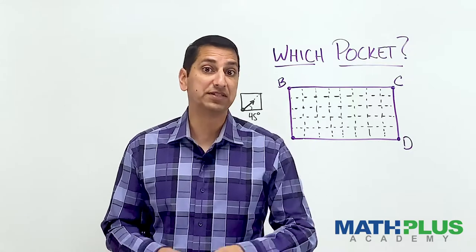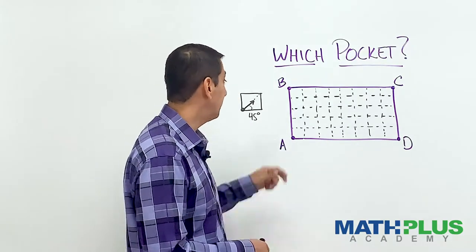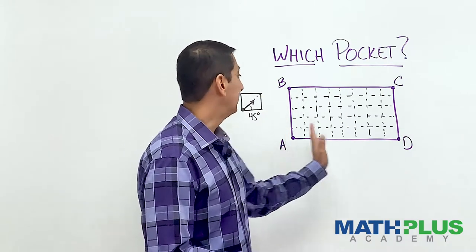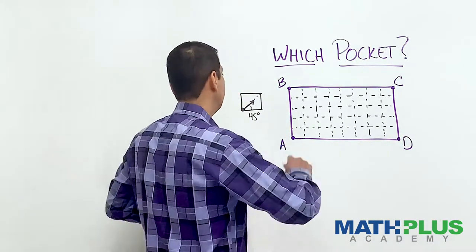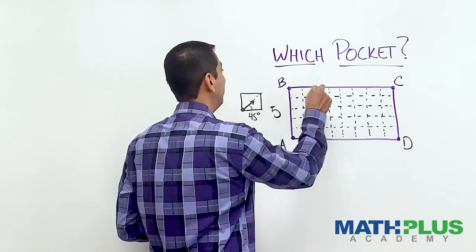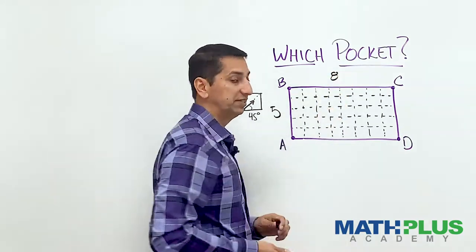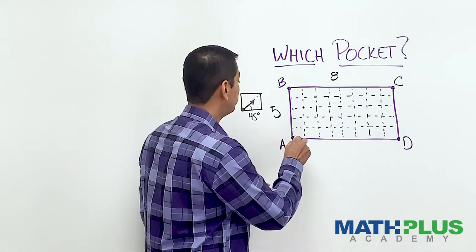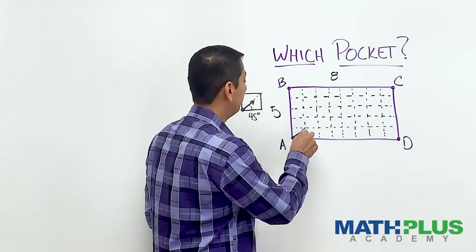So let's just do that once and see what happens in my example. So in my example, I've got one, two, three, four, sort of five units up, and I think eight units across. So let me just label that. This is a five by eight billiard table, and we're going to have a ball come out from A and travel at this 45 degree angle.